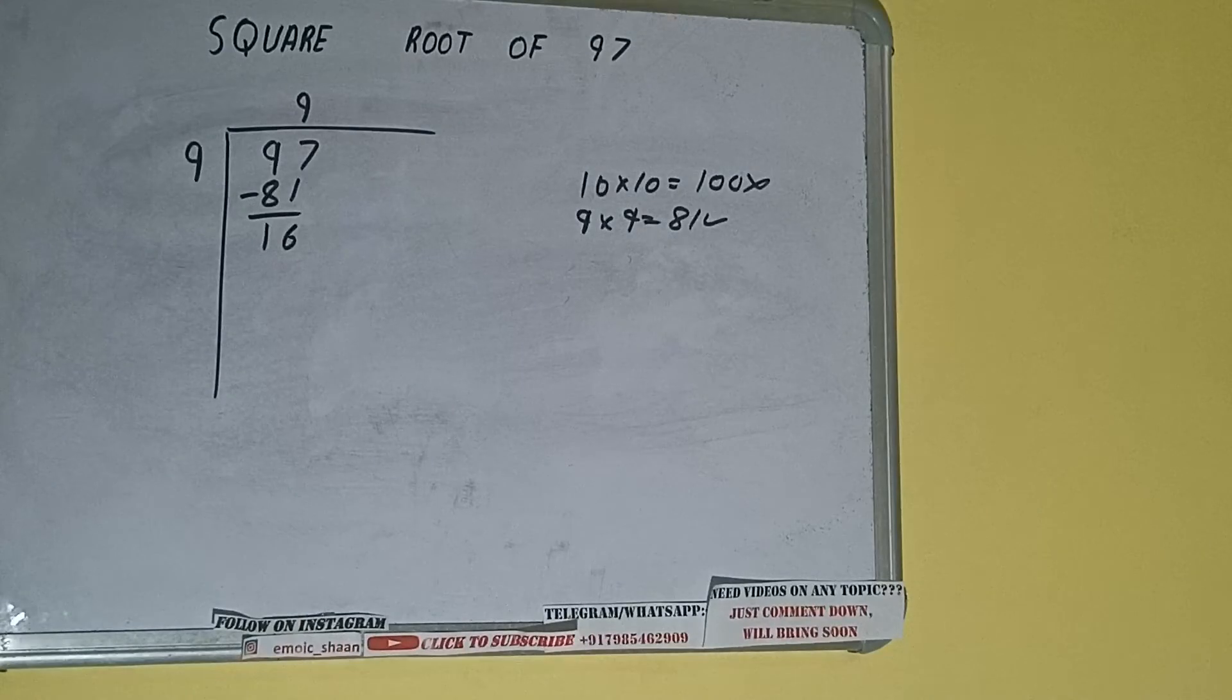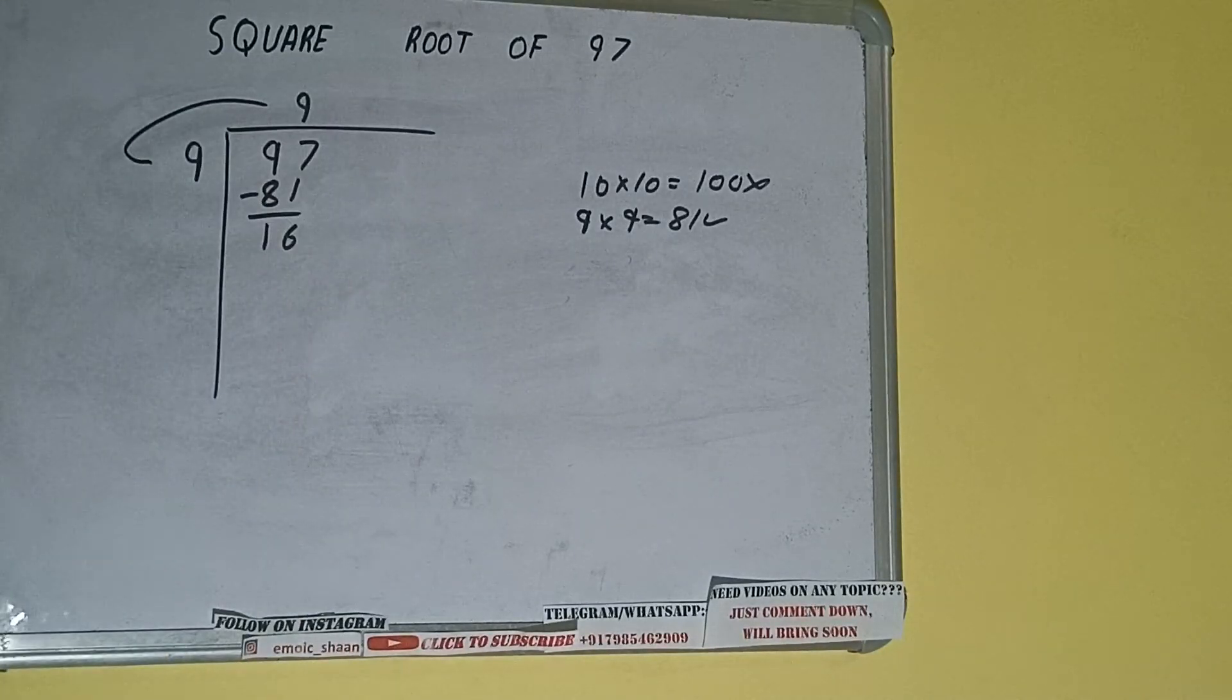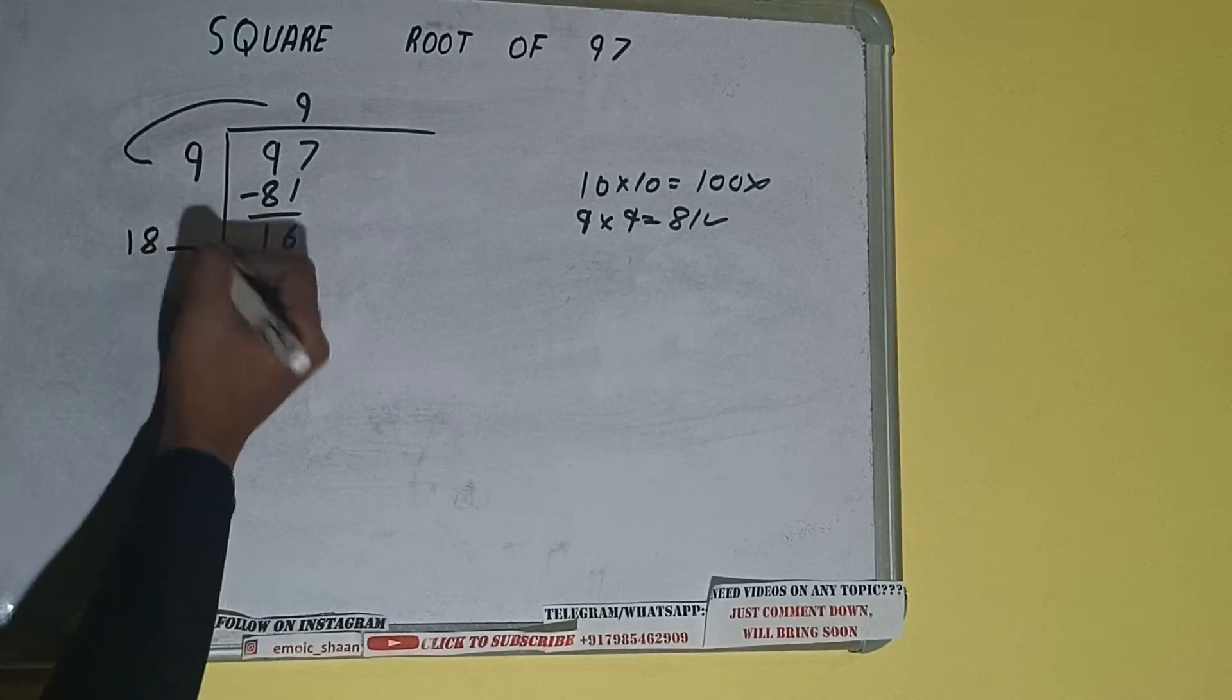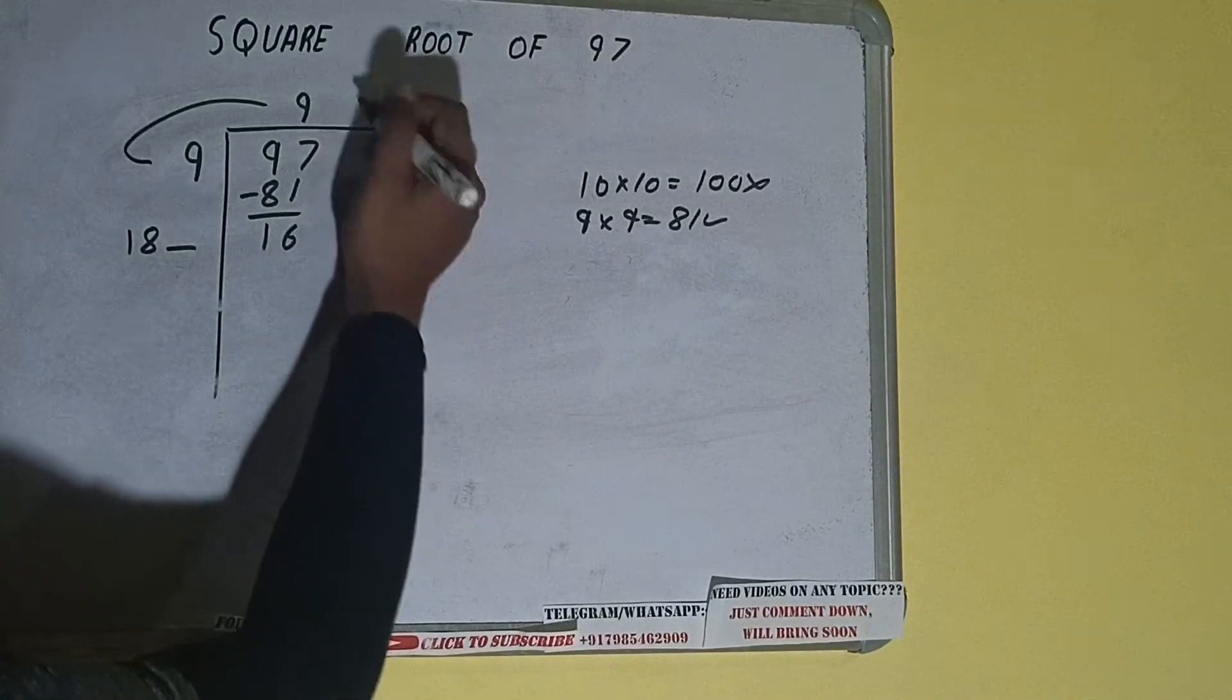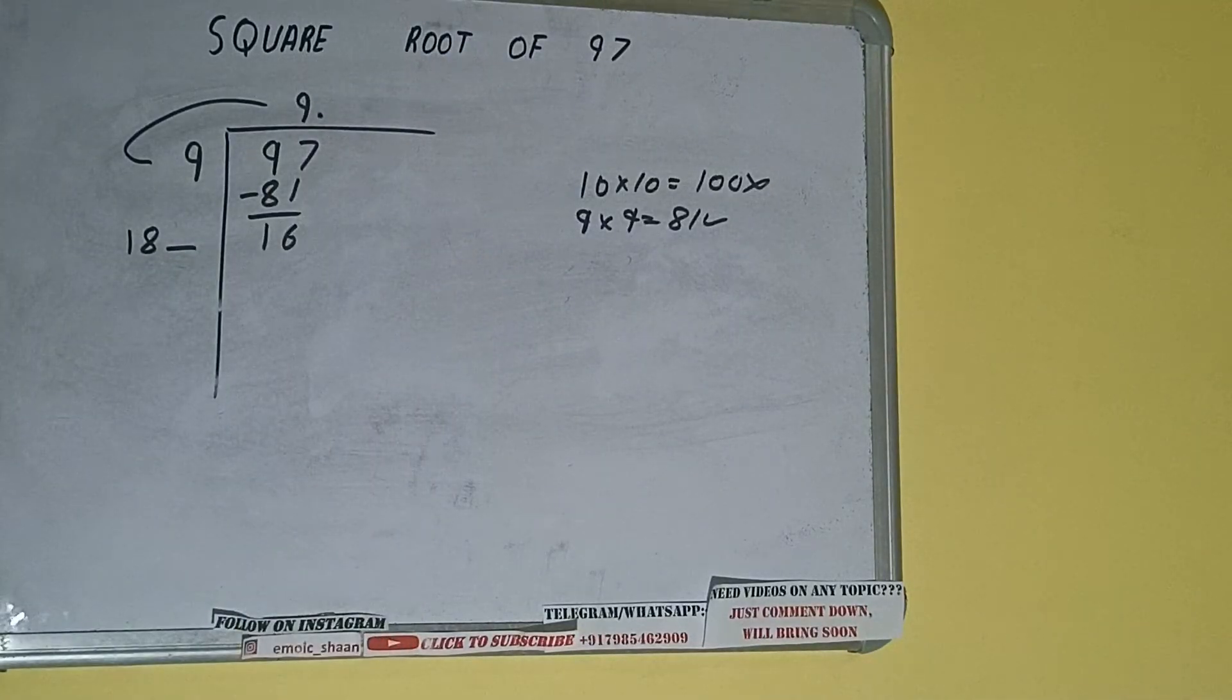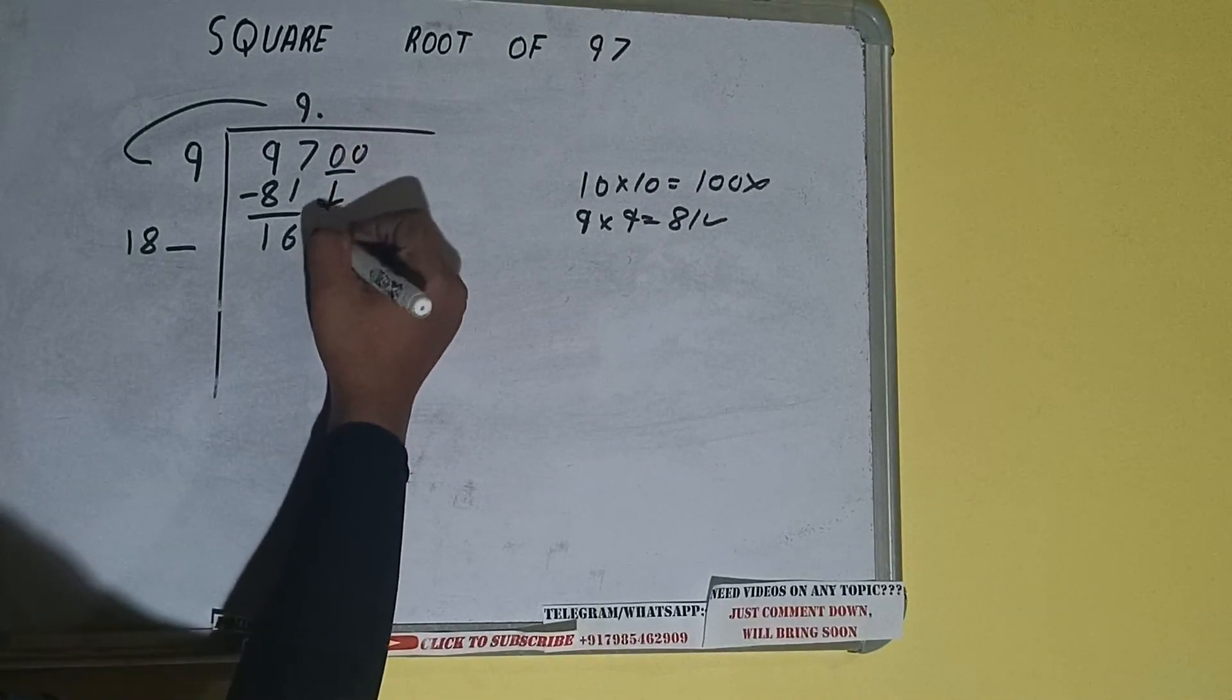Now we did 9 into 9, so add both. So 9 plus 9 will be 18. Write it here and keep a digit extra, and this number we need to make it big, but we don't have more pairs, so we'll put decimal. Once we put decimal, we can bring pair of zeros down.